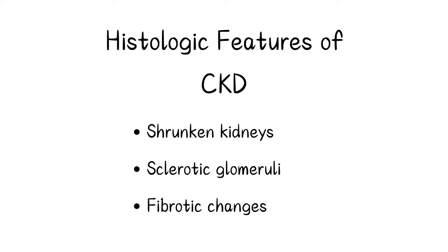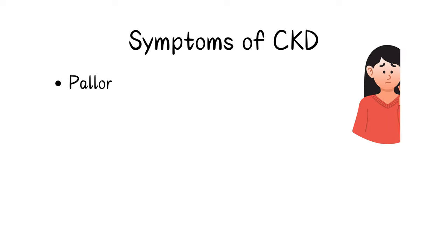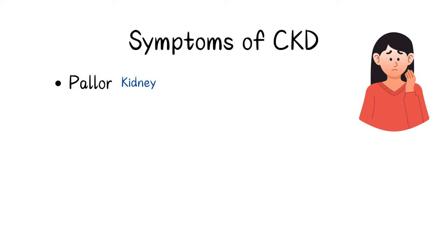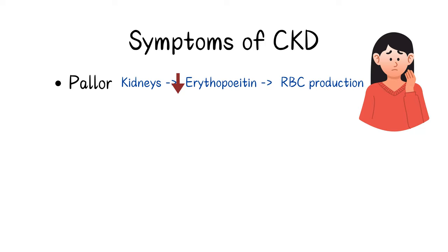Now let's have a look at the symptoms of CKD. CKD can cause pallor due to anemia. Our kidneys produce a hormone called erythropoietin that stimulates red blood cell production. In CKD, the damaged kidneys won't be able to produce enough erythropoietin, leading to a reduction in the number of red blood cells and resulting in anemia.